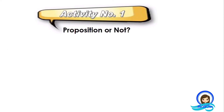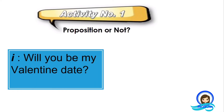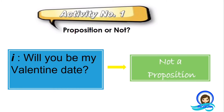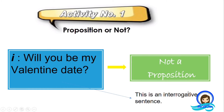What about this: Will you be my valentine date? It is not a proposition. Why? It's because this is an interrogative sentence — a sentence that asks a question. In this statement, it is asking if you can be my valentine date. That is why this is not a proposition.